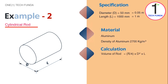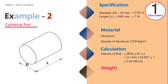Now we calculate the volume of the rod. The formula is (π/4) × d² × length. After substituting the given values into the formula, we obtain the volume of the rod. Now we have volume and density, and after putting the values into the formula, we get the weight. The weight of the cylindrical rod is 5.29 kg.